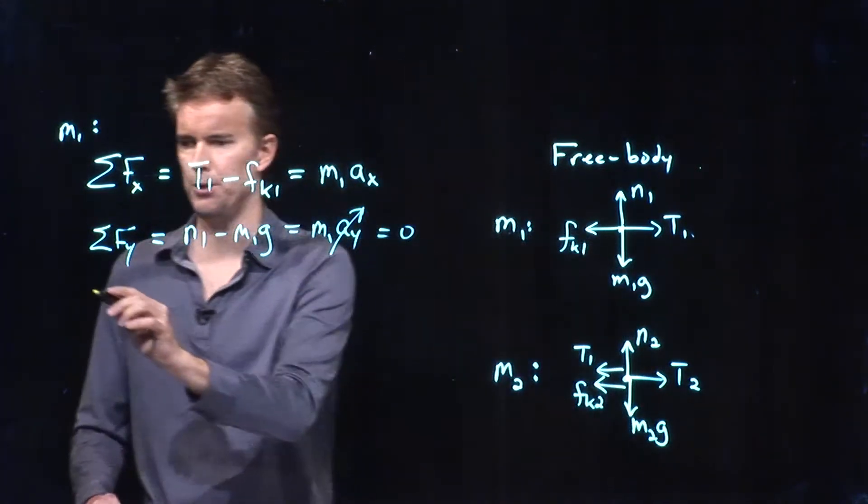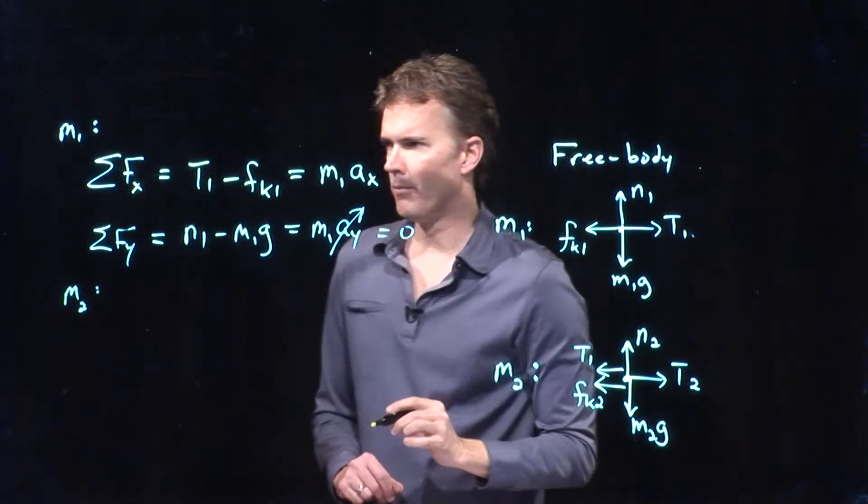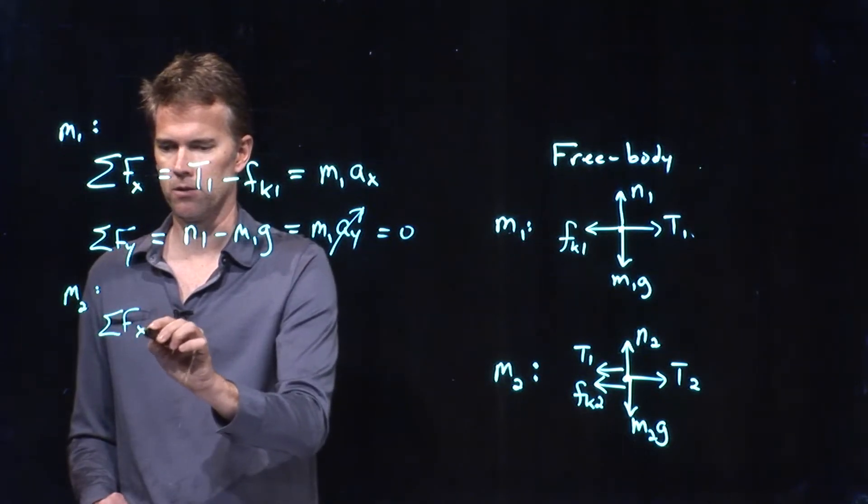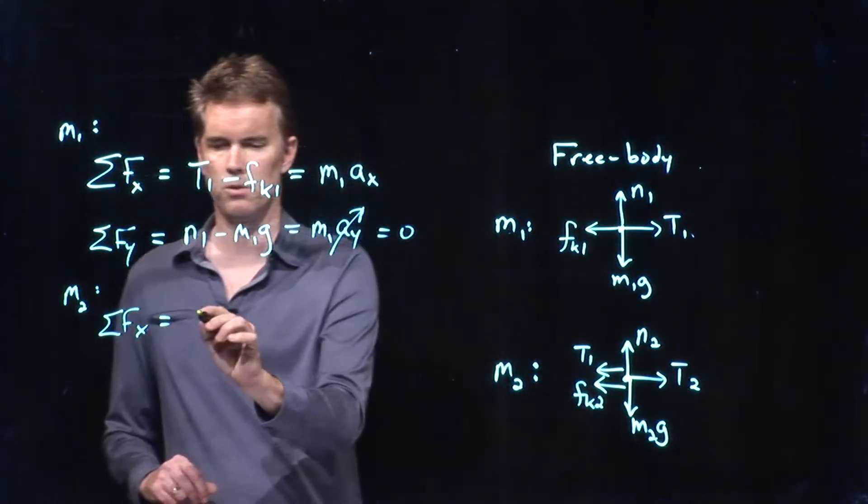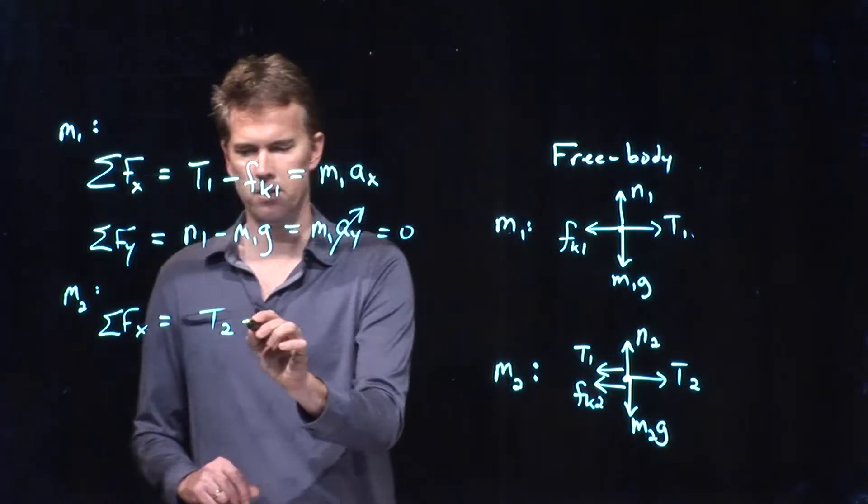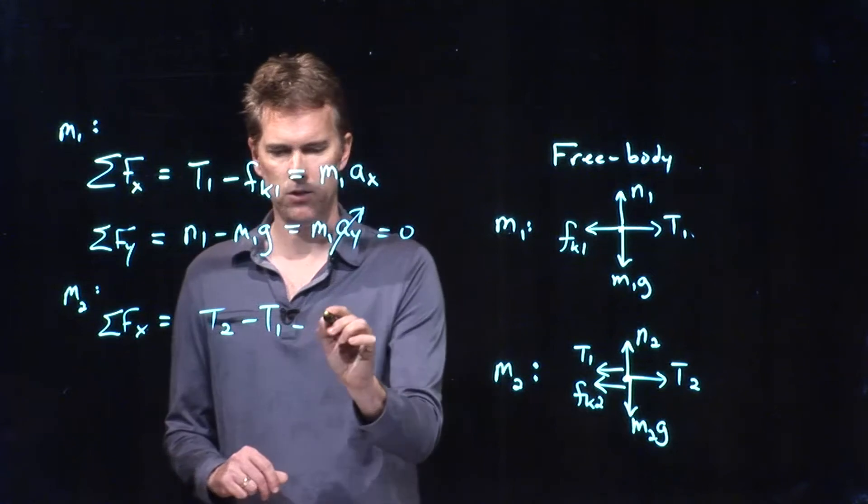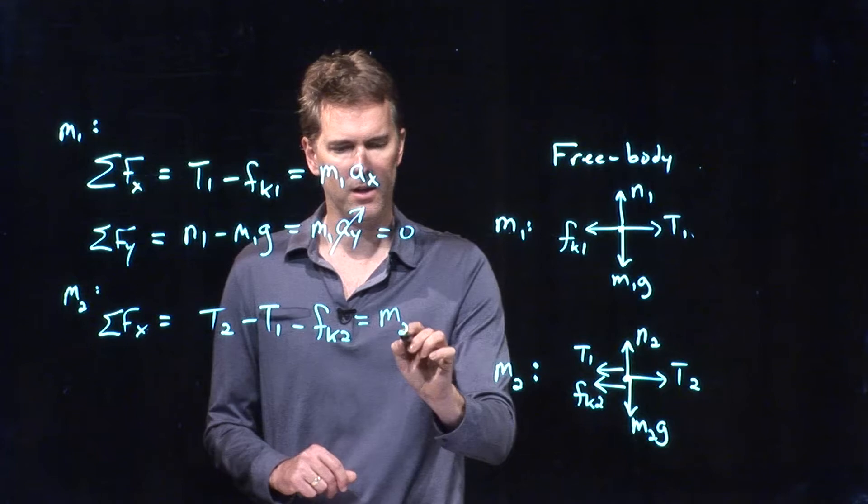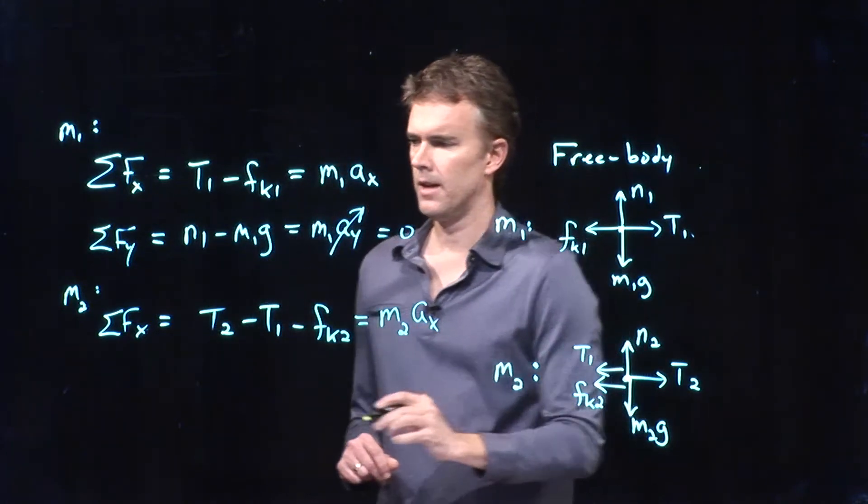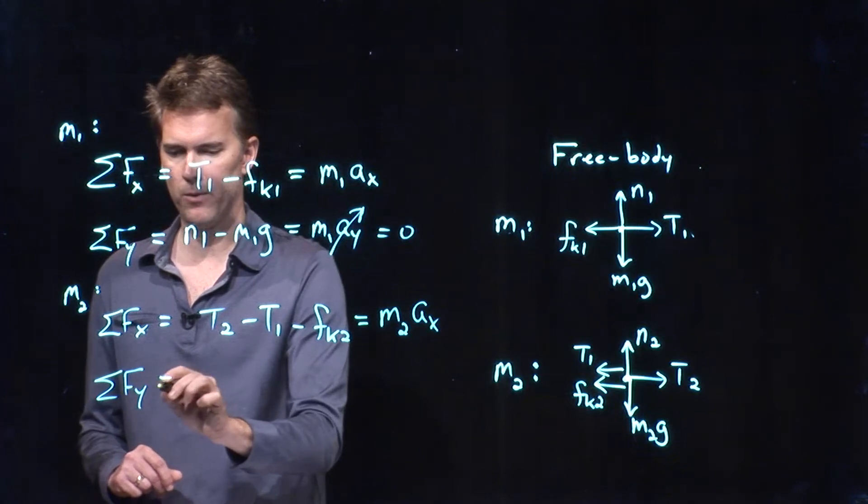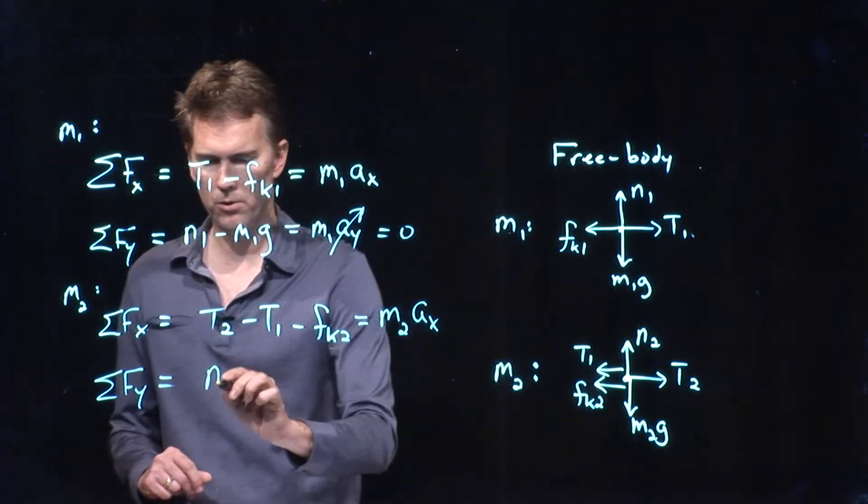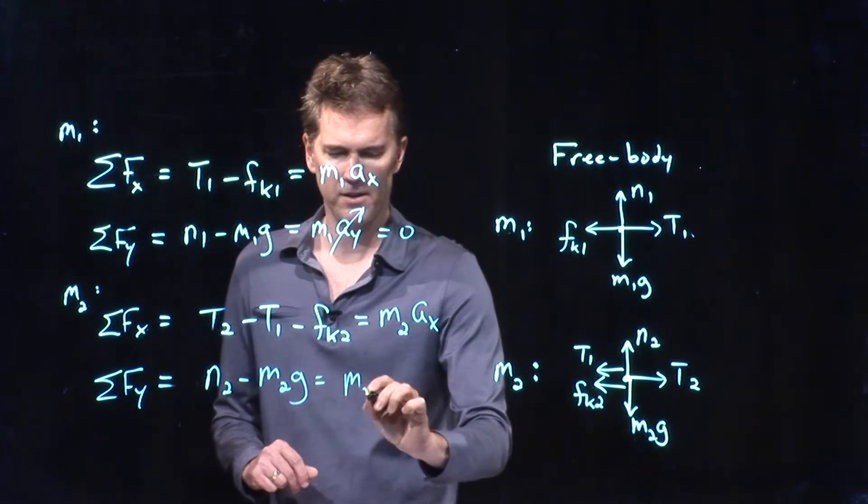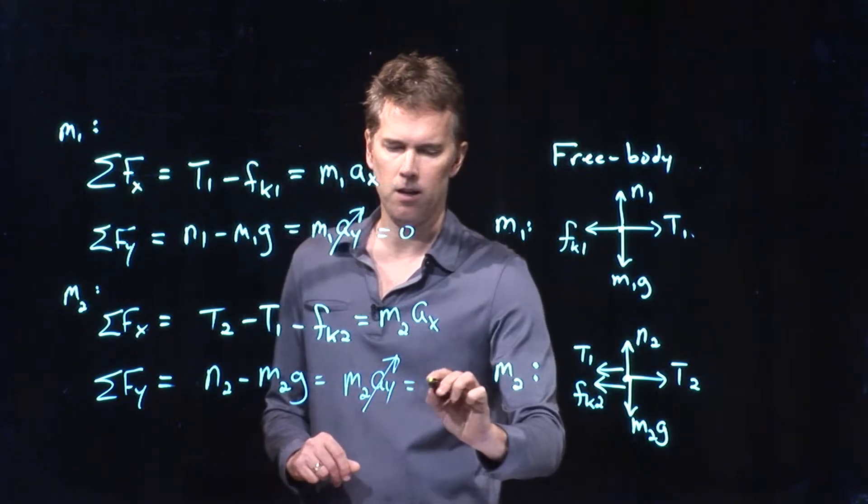What about M2? For M2, we're going to have the following. Sum of the forces in the x direction. T2 to the right. T1 to the left. FK2 to the left. And that's equal to the mass times the acceleration in the x direction. And finally, we have the sum of the forces in the y direction. And for that, we have N2 going up. M2G going down. That's equal to the mass times the acceleration in the y direction. But again, that's zero.